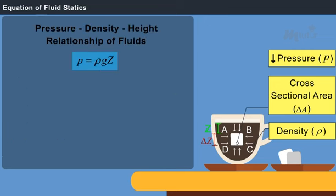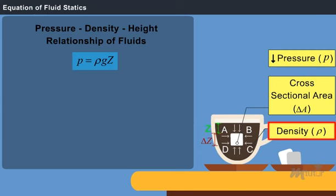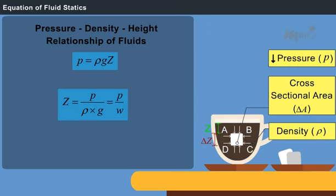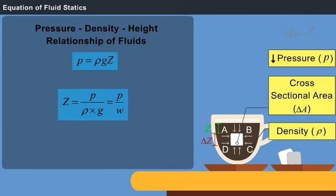In this equation, P is the pressure acting in the fluid, Z is the height of the element from the free surface, and rho is the density of the fluid. This equation is considered as the pressure-density-height relationship of fluids. For pressure head consideration, the equation can be represented by Z, where Z equals P divided by rho into G, which is equal to P by W.